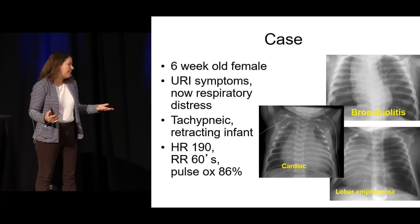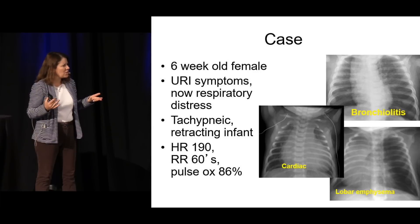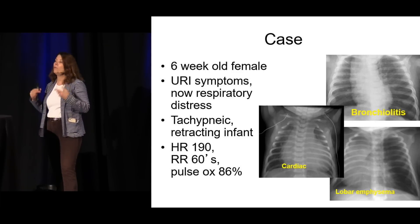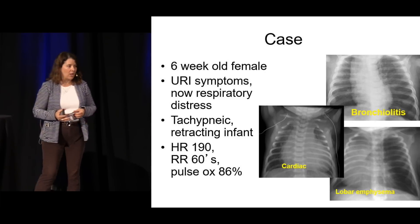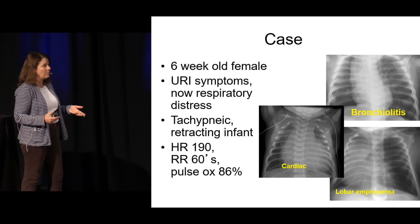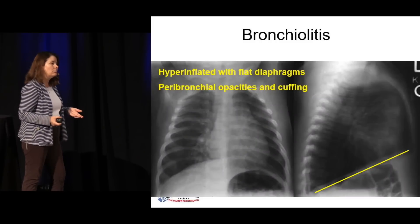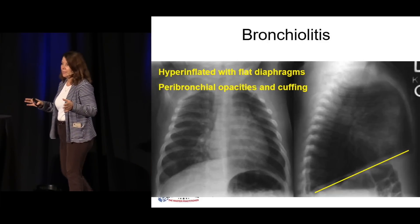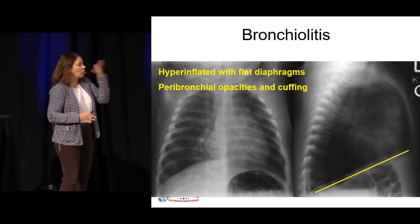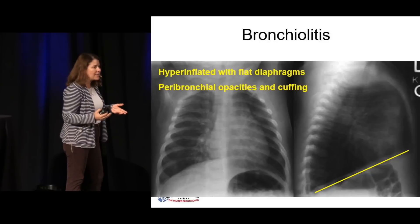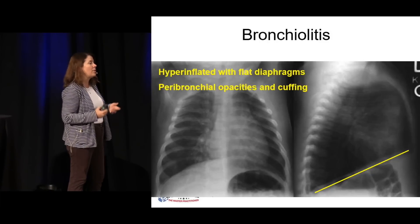Let's go through a case, because this is not untypical of what you might see. You have a six-week-old female. The baby's had a little bit of URI symptoms. Now mom brings the baby in because there seems to be real respiratory distress. You see a retracting, tachypneic infant in front of you — baby's tachycardic, breathing in the 60s, and the pulse ox isn't great. If it's the middle of January and it's a one-year-old that started off with a URI, now wheezing and tachypneic, it looks like a zebra, walks like a zebra — it's probably bronchiolitis.